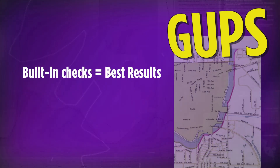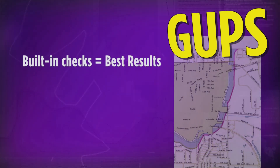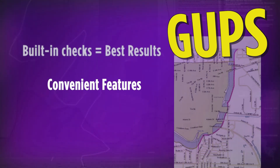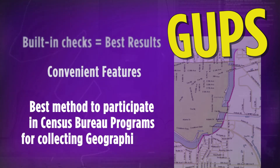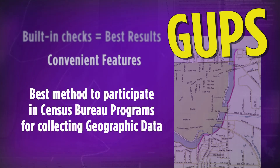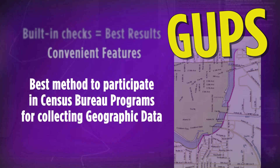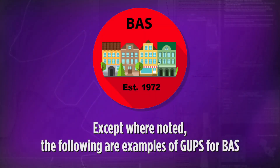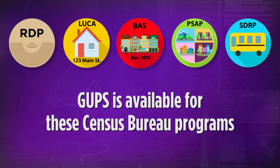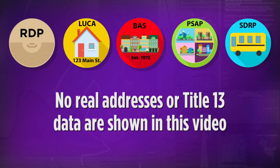Additionally, GUPS has many built-in checks to help produce the best results. Combined with the convenience of its many features, GUPS is the best means of participation in Census Bureau programs for collecting geographic data. Except where noted, the following examples illustrate the use of GUPS for the Boundary and Annexation Survey, or BAS. However, GUPS is available for these Census Bureau programs. No real addresses or Title 13 data are being shown in this video.